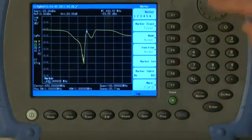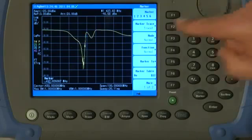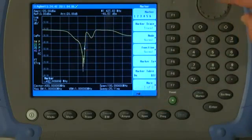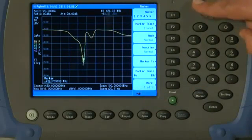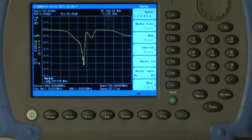And if I press the marker button and turn the knob, we can move marker 1 here down to the notch of the filter and see approximately what frequency that notch is.